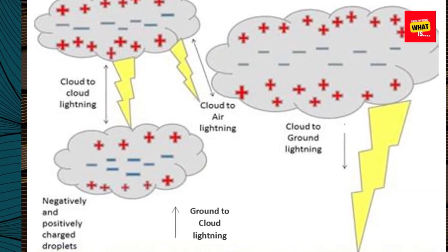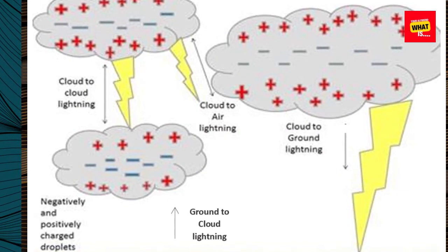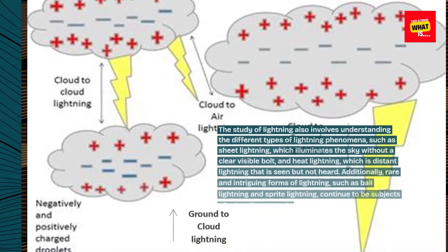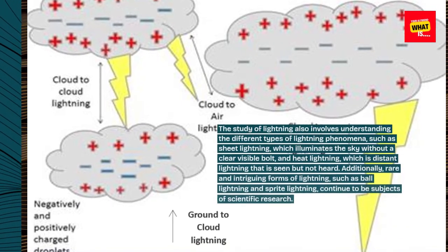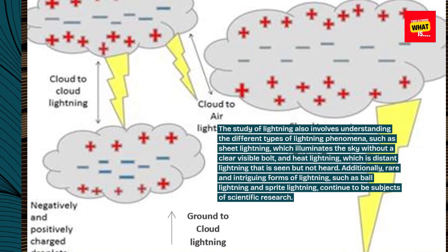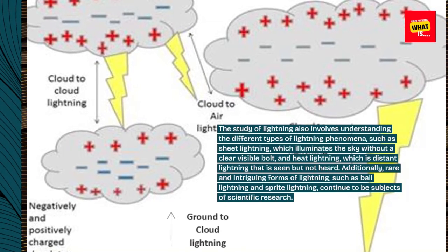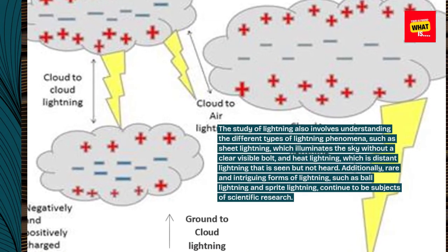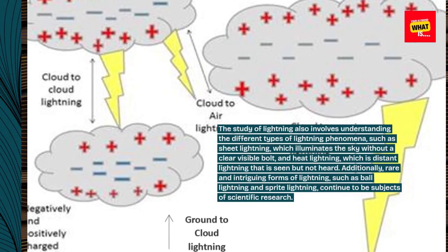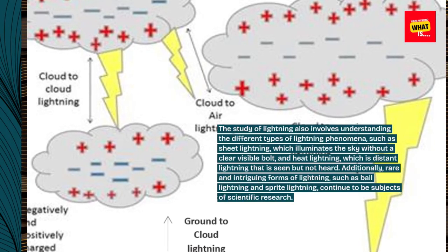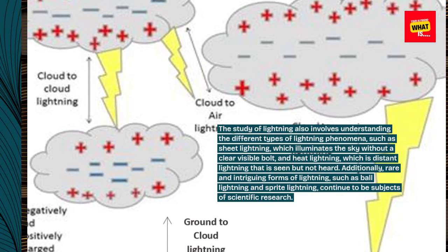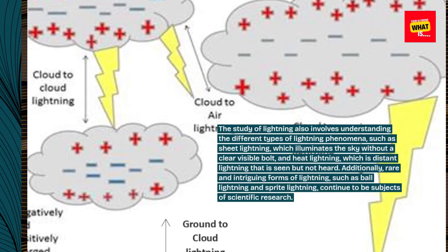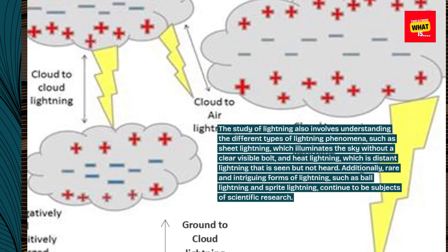The study of lightning also involves understanding different types of lightning phenomena, such as sheet lightning, which illuminates the sky without a clear visible bolt, and heat lightning, which is distant lightning that is seen but not heard. Additionally, rare forms such as ball lightning and sprite lightning continue to be subjects of scientific research.